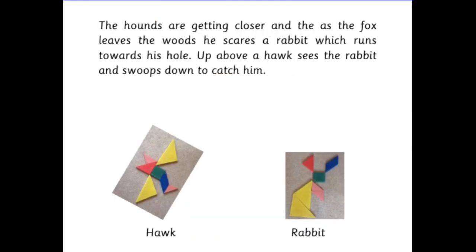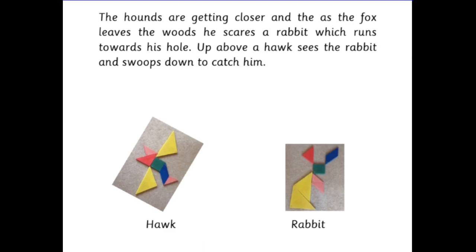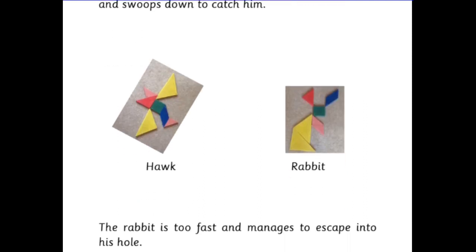The hounds are getting closer and as the fox leaves the woods he scares the rabbit which runs towards his hole. Up above a hawk sees the rabbit and swoops down to catch him. The rabbit is too fast and manages to escape into his hole.